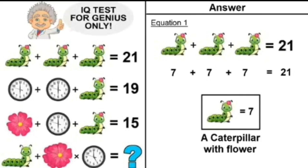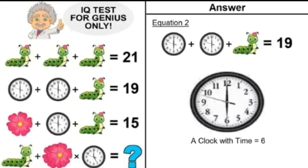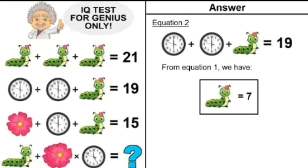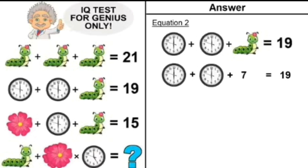Moving on to equation number 2. If we zoom in the clock, it has time 6. From equation 1, caterpillar with flower equals 7. Putting that in equation 2: clock with time 6 plus clock with time 6 plus caterpillar (value 7) equals 19. So a clock with time 6 is equal to 6.